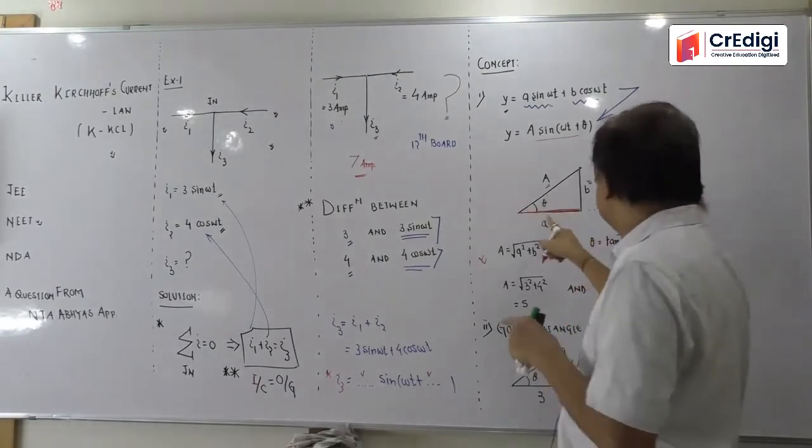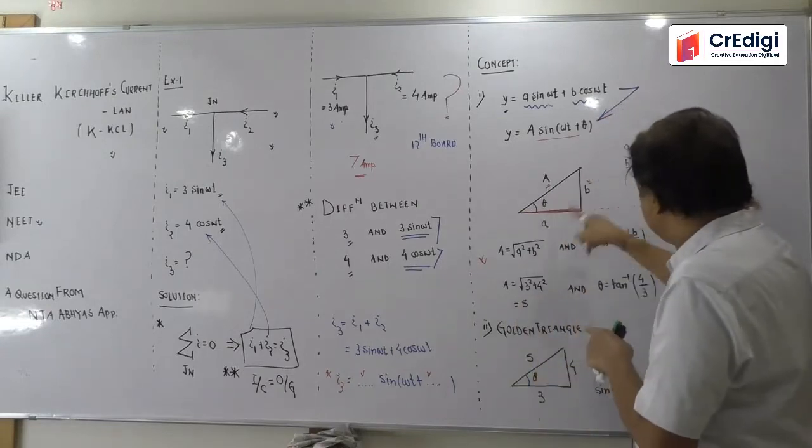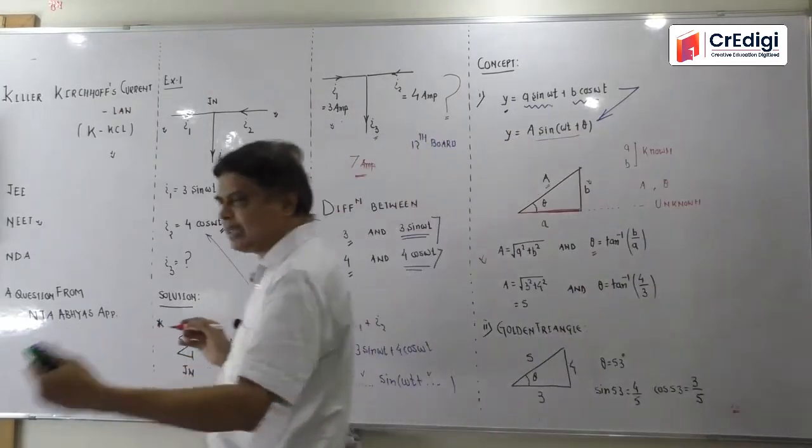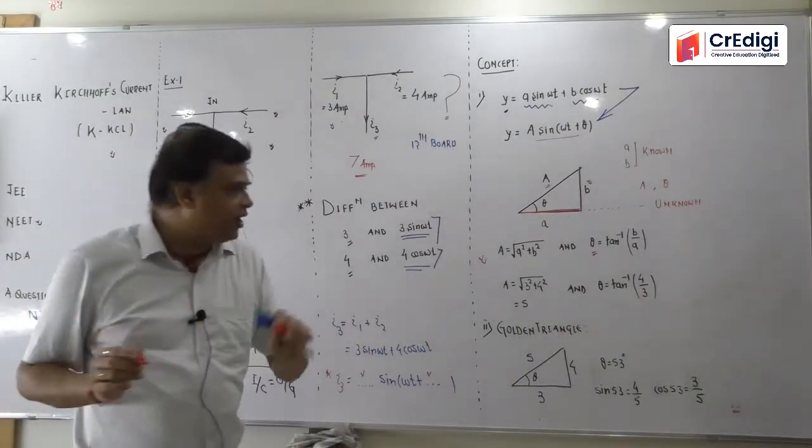So tan theta should be equals to tan theta. So tan theta should be equals to B by A. So theta will be equals to tan inverse B by A. Now this is standard. I will call it. I have no event but not to do it. So the student can easily solve.